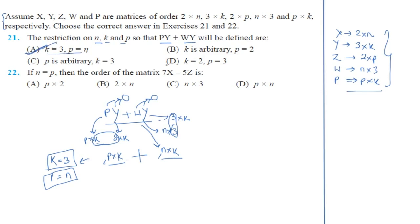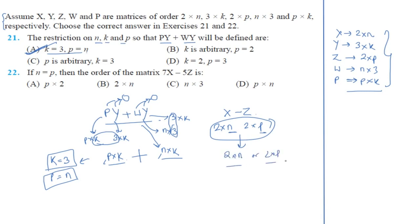For question 22, given n = p, the order of the matrix 7X − 5Z: a scalar only changes the elements inside, not the order. The order of X is 2×n and the order of Z is 2×p. Since n = p, subtracting two matrices of the same order gives a result of the same order, which is 2×n — or equivalently 2×p. So option B, 2×n, is the correct answer.